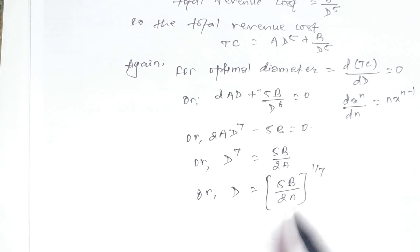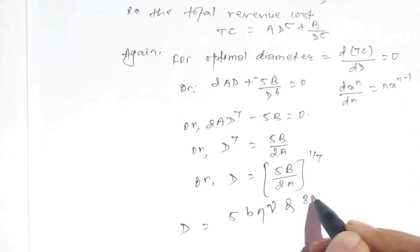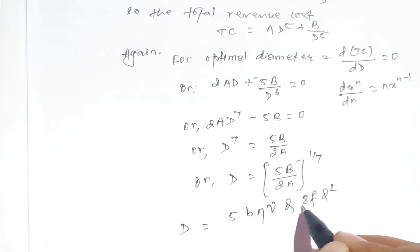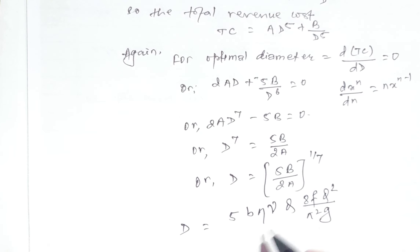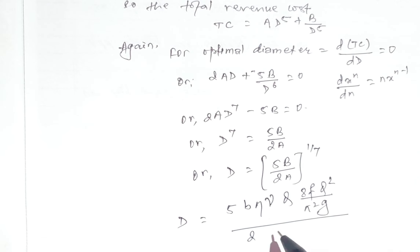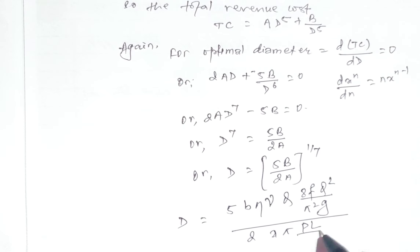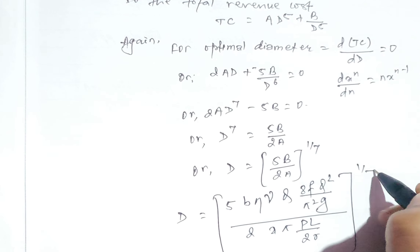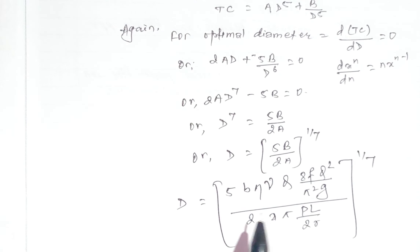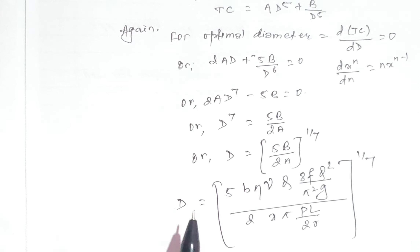Now placing the values of B and A: d equals [5 times (gamma·Q·8·f·Q² divided by π²·g) divided by 2 times (A·π·p·l divided by twice of sigma)] raised to the power of 1/7. Using this formula and placing all given values, we can find the most economical diameter of the penstock.